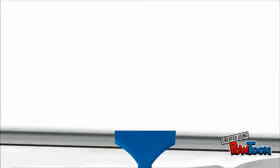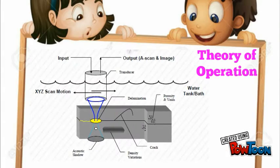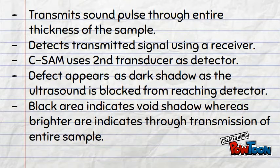Using the transmission method, sound pulses are transmitted through the entire thickness of the sample, causing voids to appear as dark shadows as the ultrasound is blocked from reaching the detector, as shown in the figure.